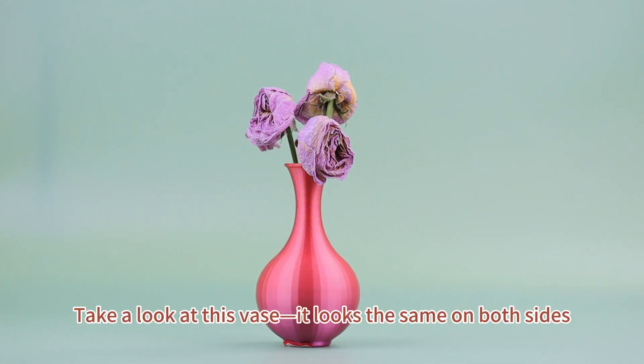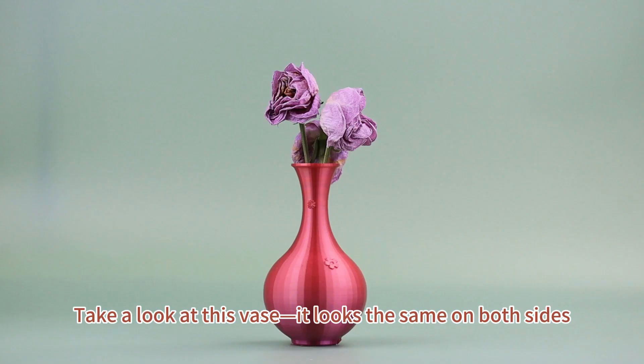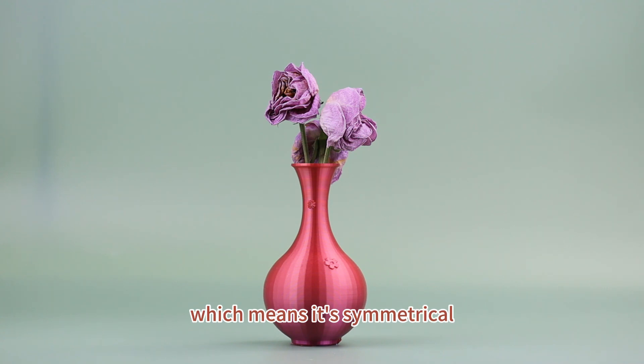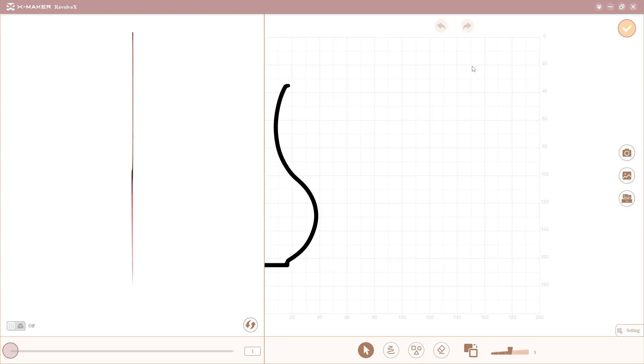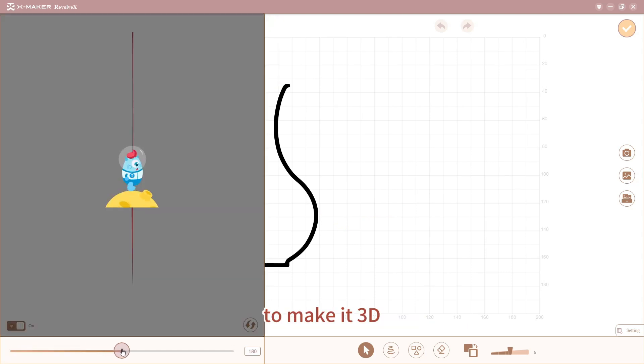Take a look at this vase. It looks the same on both sides, which means it's symmetrical. This is because it's made by a process called revolving. In 3D modeling, revolving is like spinning a flat shape, which looks like half of the vase's side profile, around an axis, like an imaginary line, to make it 3D.